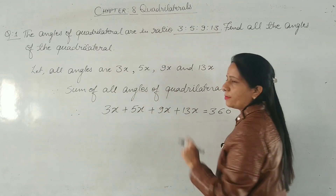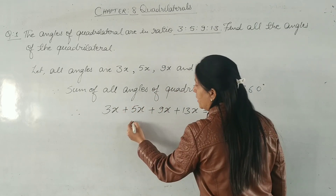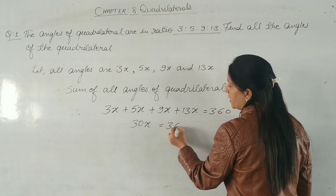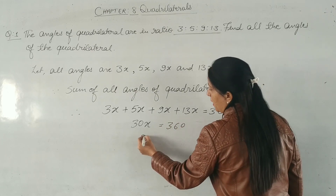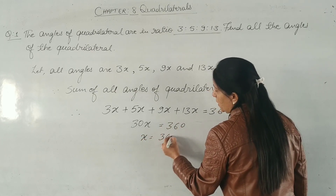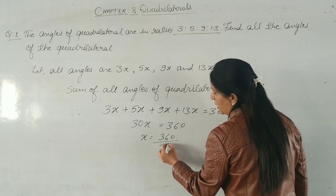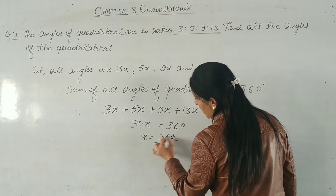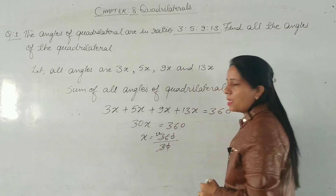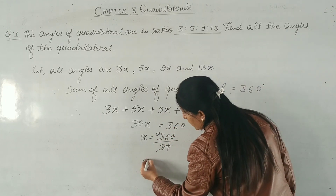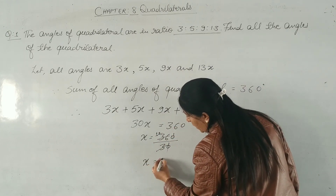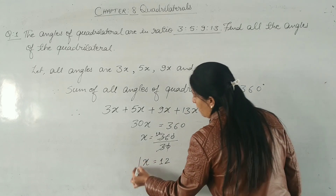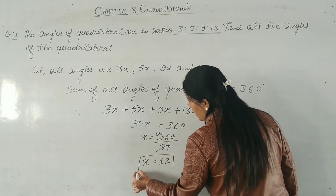Adding: 13 + 9 = 22, 22 + 5 = 27, 27 + 3 = 30. So 30x = 360, then x = 360 ÷ 30. Cancelling the zeros, x = 12.